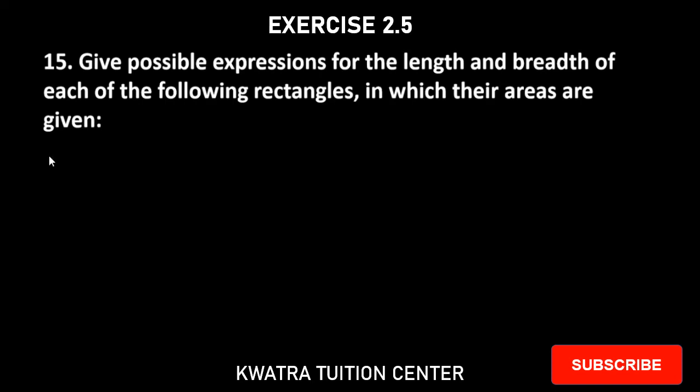Let's start with question number 15. It says give possible expressions for the length and breadth of each of the following rectangles in which their areas are given. So here we have areas. The first part is 25a² - 35a + 12. This area has been given.